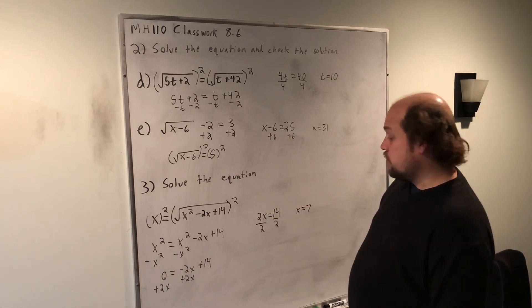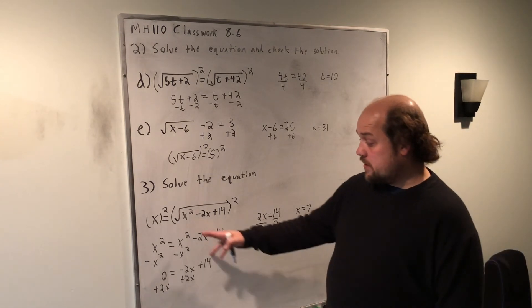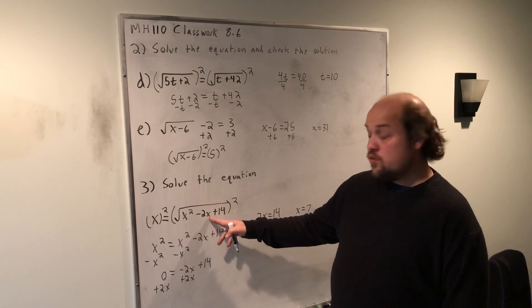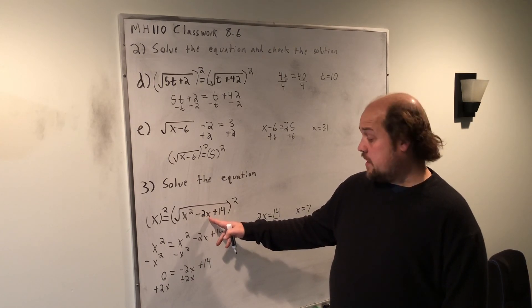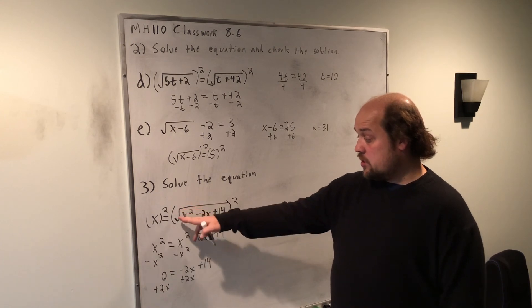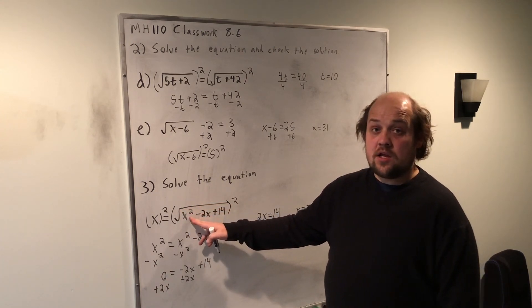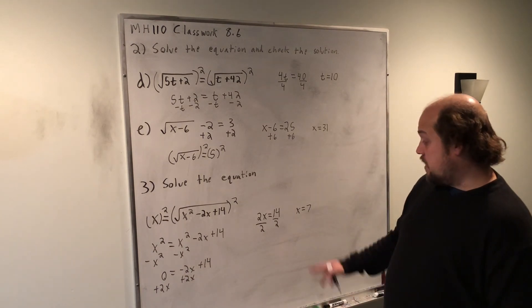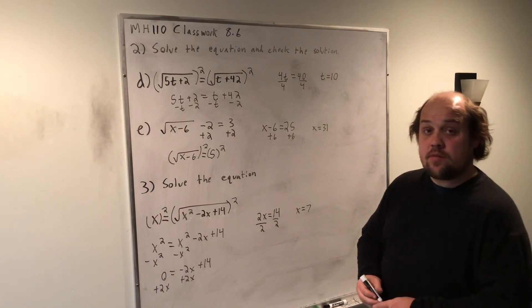If I plug this back in, 7 squared is 49. Negative 2 times 7 is negative 14. Negative 14 and positive 14 cancel each other out, so I just have the root of 49. The root of 49 is 7, which was what was on the left-hand side, so this is the correct answer to the problem.